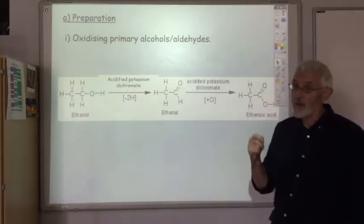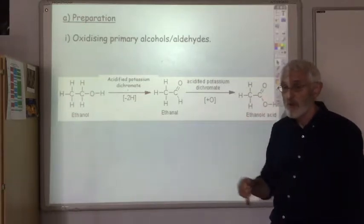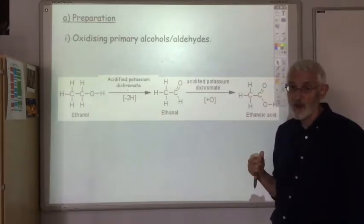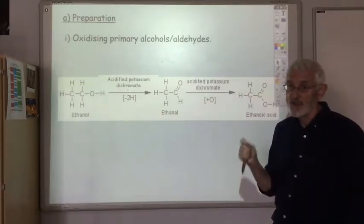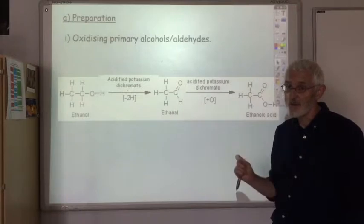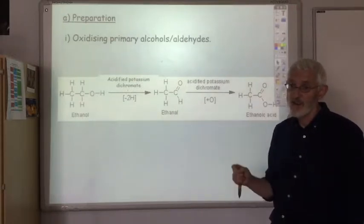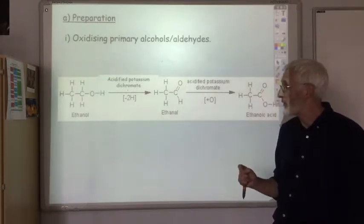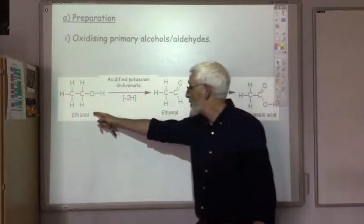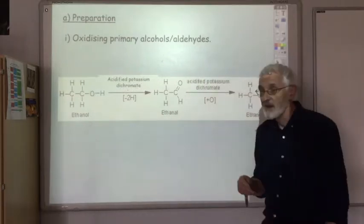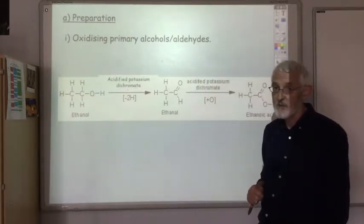Remember, it's only a primary alcohol that will oxidize eventually to a carboxylic acid. The secondary alcohol gets oxidized to a ketone and no further, and the tertiary alcohol doesn't get oxidized at all. So it's got to be a primary alcohol or an aldehyde in order for the oxidation to produce a carboxylic acid.